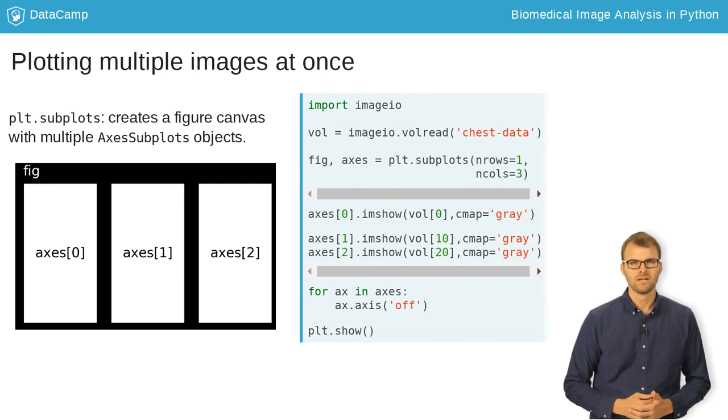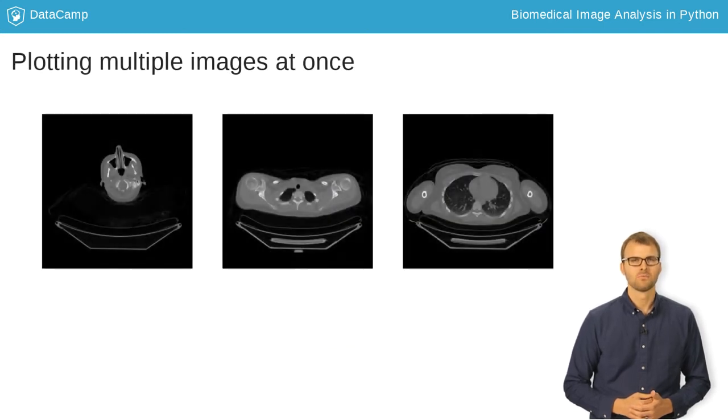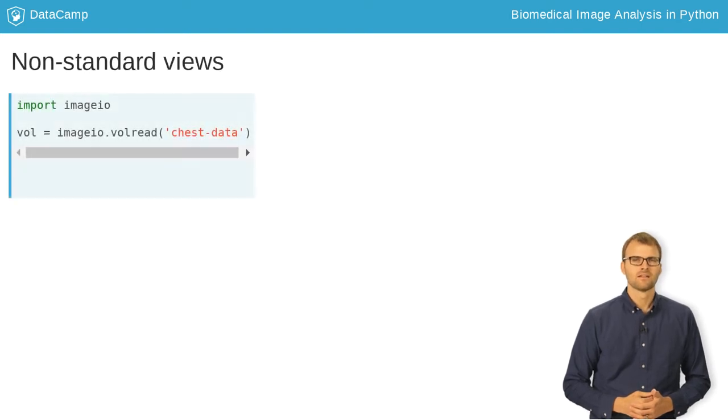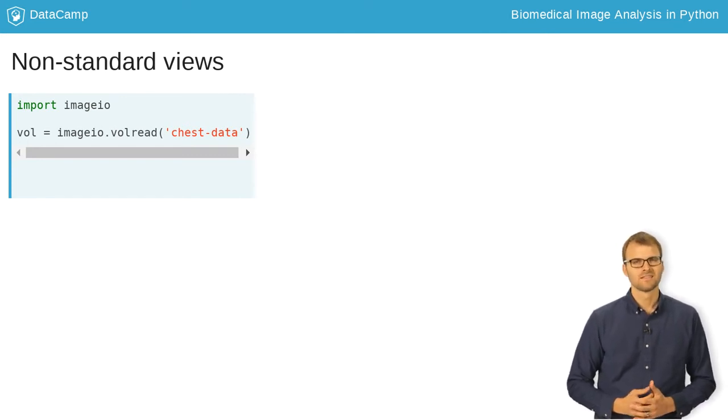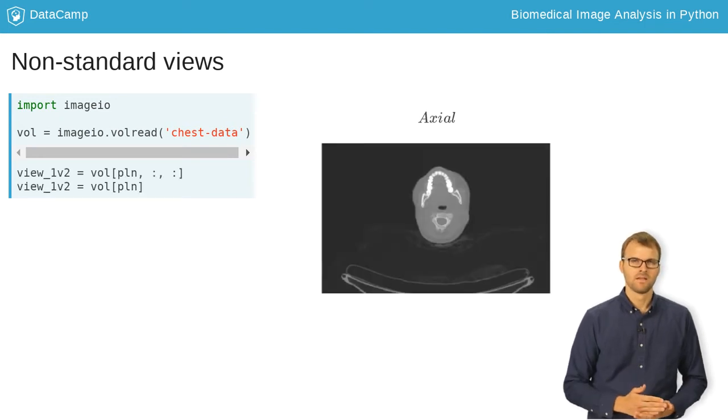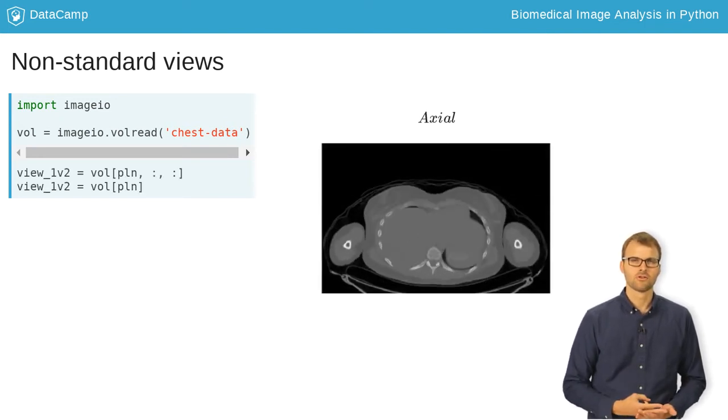And we are greeted with a nice set of images that move sequentially through the chest volume. There are actually multiple ways you can slice a 3D volume into 2D images. The simplest way is to choose a frame along the first dimension and plot the second and third against each other.